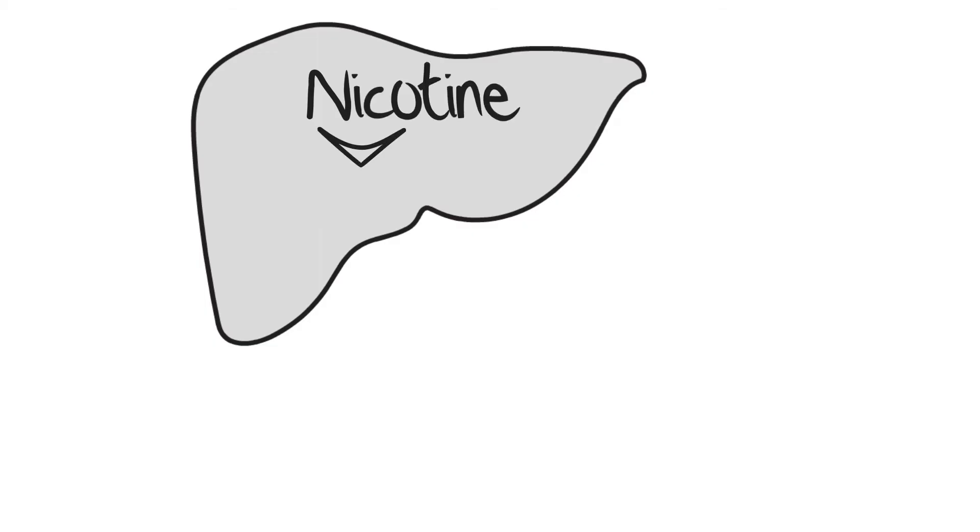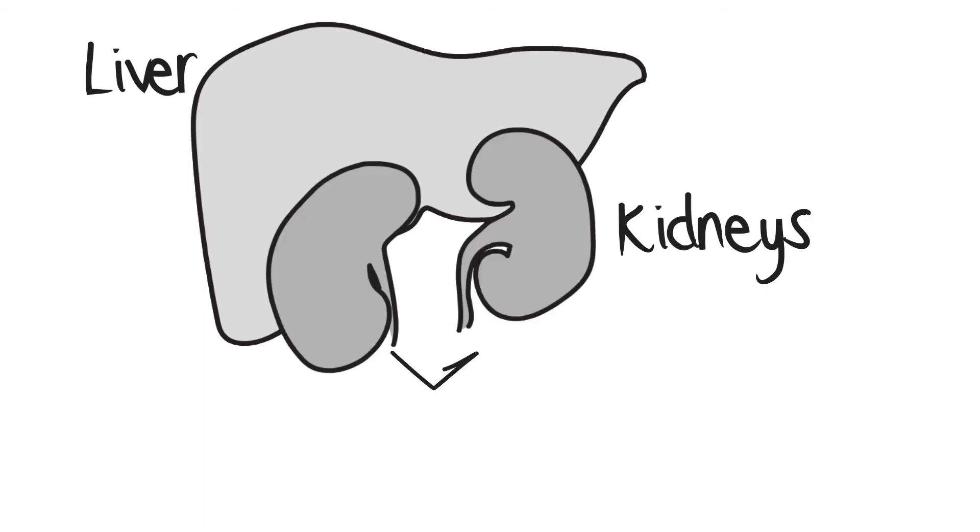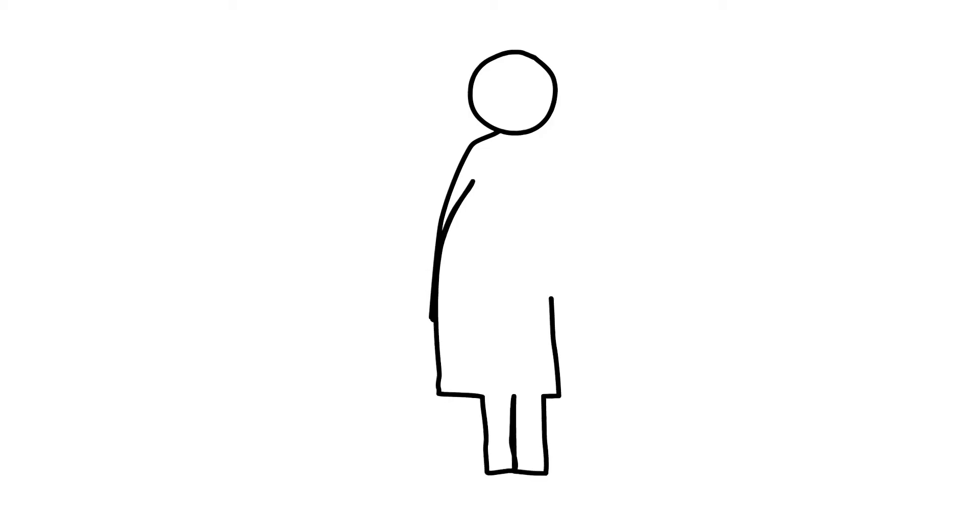Most of the nicotine in the blood is metabolized to cotinine and other inactive compounds in the liver and then excreted by the kidneys. Nicotine also accumulates in breast milk and amniotic fluid and can be detected in the blood and urine of nursing infants whose mothers use tobacco. The half-life of nicotine is around two hours.